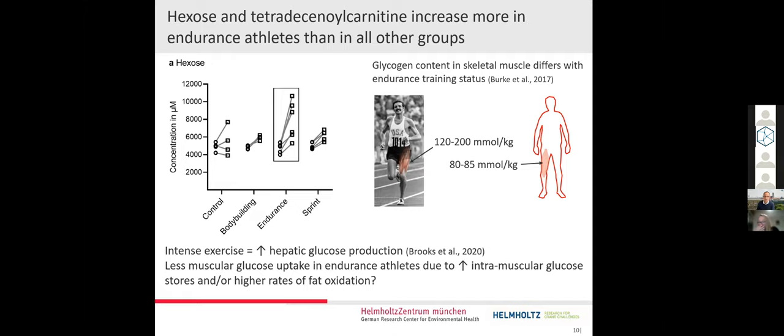Actually, the glycogen content in skeletal muscle differs with endurance training status. The intramuscular glucose stores are higher in endurance-trained subjects. It can be over two times higher in endurance-trained subjects than in controls, which means that endurance-trained people need less glucose from the blood compared to untrained subjects. And endurance-trained subjects have higher rates of fat oxidation, therefore also probably need less glucose.